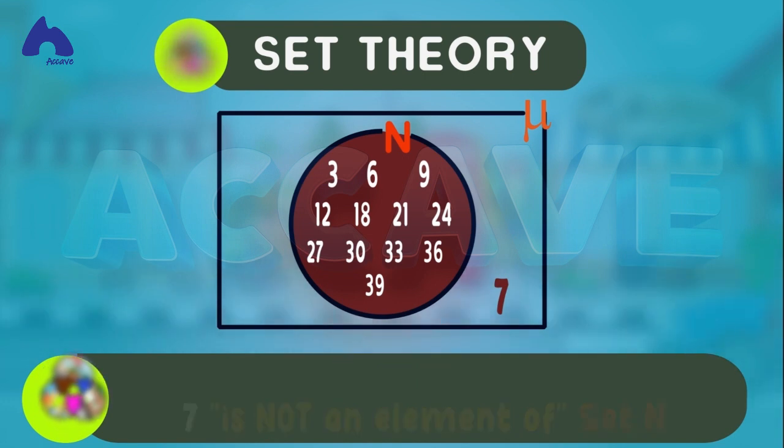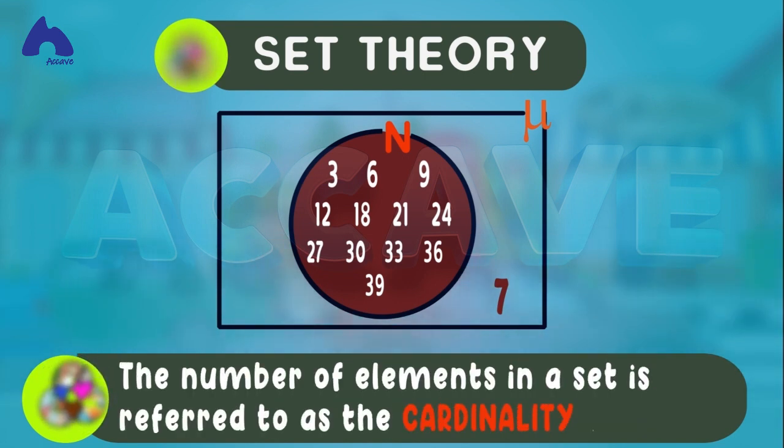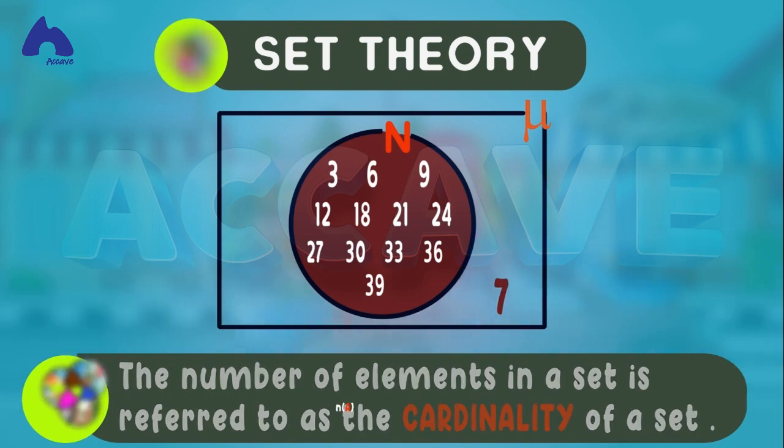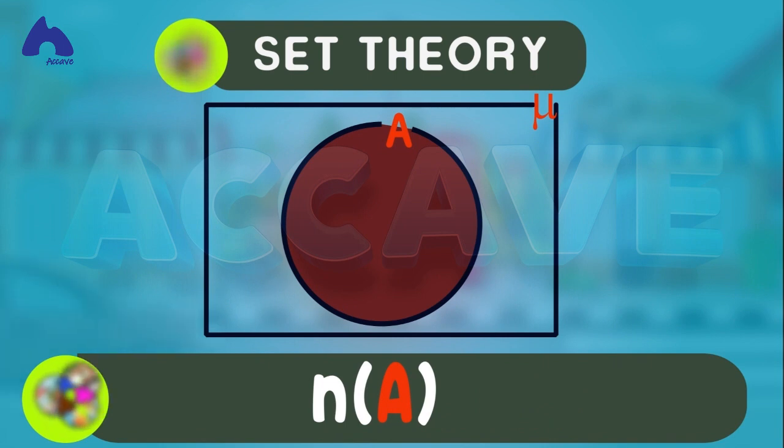Finally, in this lesson, the number of elements in a set is referred to as the cardinality of a set. It is denoted by this symbol, where a is the set.